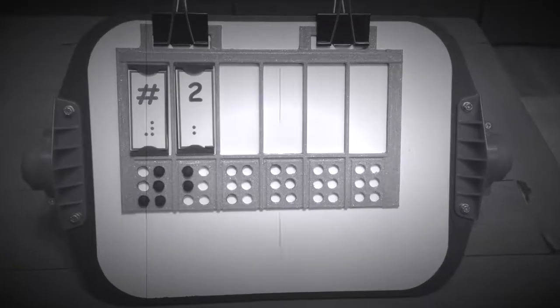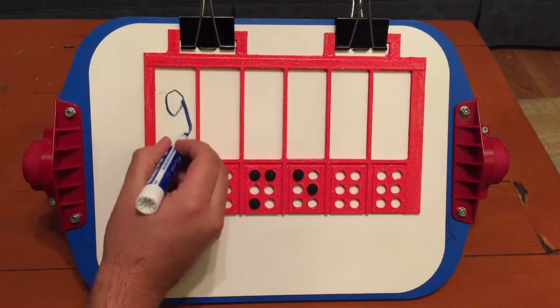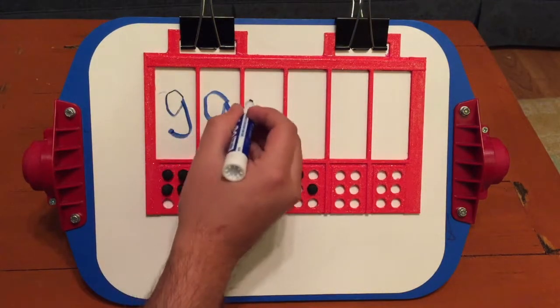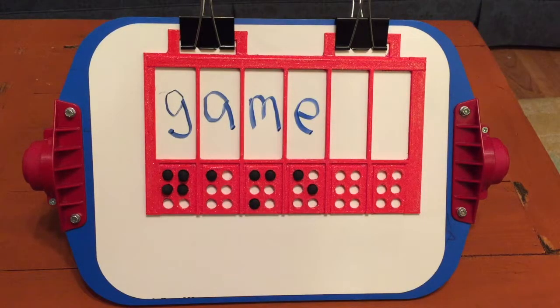Two: When a low vision student is ready and no longer needs the Braille prompt, simply take away the boxes and write in whatever word you would like them to practice. Once again, they will fill in the corresponding 3D printed Braille dots.